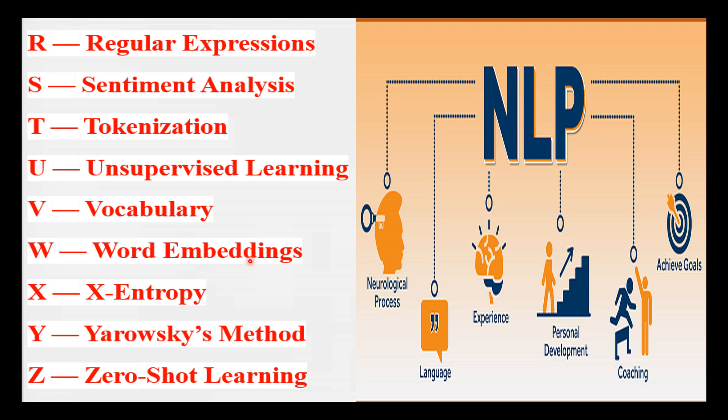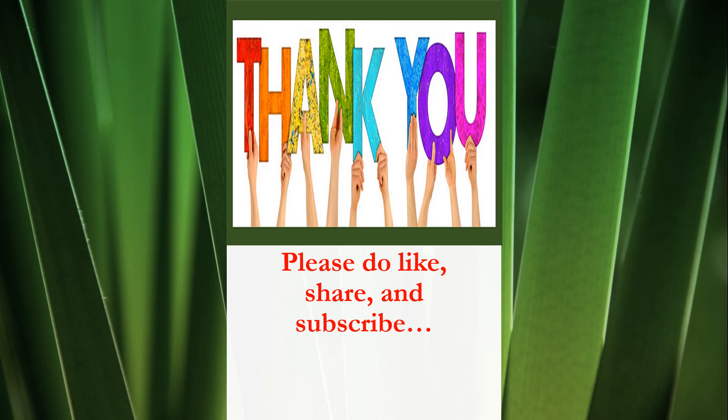Z is for Zero-Shot Learning — a technique where a model can perform new tasks without being explicitly trained on them. Imagine a language model that can translate from languages it has never seen before, based on its general understanding of language patterns. For example, 'the bank of the river' versus 'the bank deposited money.'